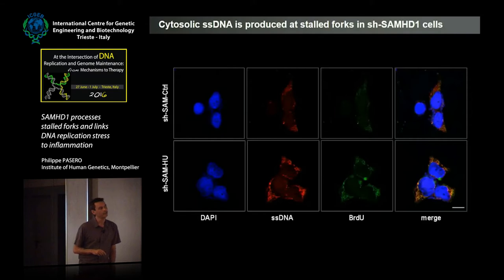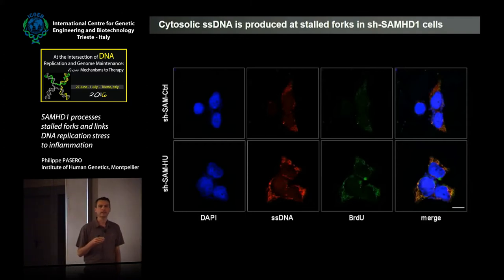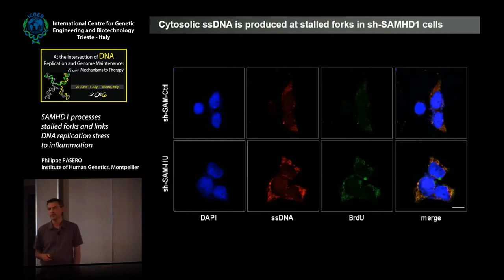If we label ongoing replication at forks just before adding HU with BrdU, and then look at cytosolic DNA two hours later, we found that the cytosolic DNA in SAMHD1-depleted cells is actually labeled with BrdU, indicating that indeed this DNA is directly coming from the stalled replication fork.